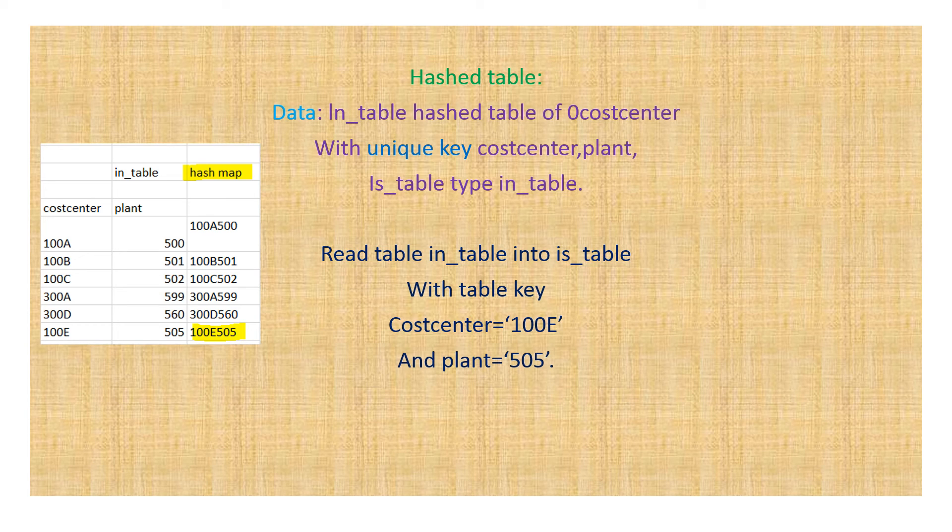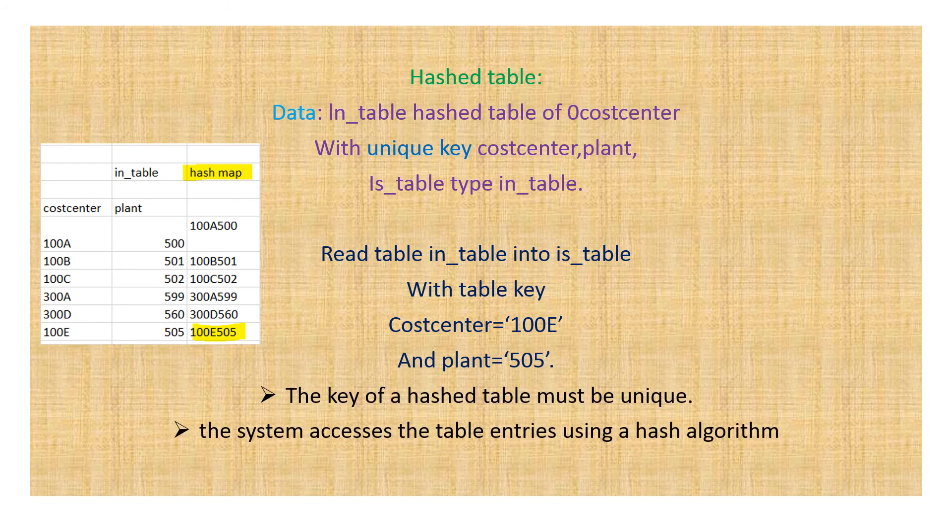In this hash map, the system automatically creates a kind of structure where those data can be uniquely identified. It is what system calculates inside this program. There are two basic features that we should know: the key of a hash table must be unique and the system accesses the table entries using a hash algorithm.